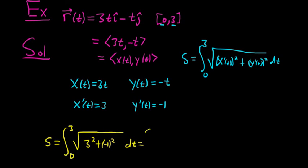So this is equal to the definite integral from 0 to 3 of the square root of, let's see, 3 squared is 9, and negative 1 squared is 1. So we get 9 plus 1 dt. This is the integral from 0 to 3 of the square root of 10 dt.